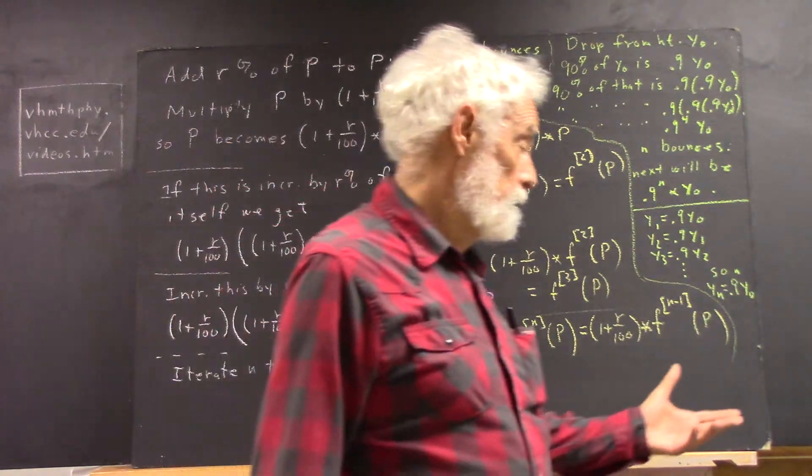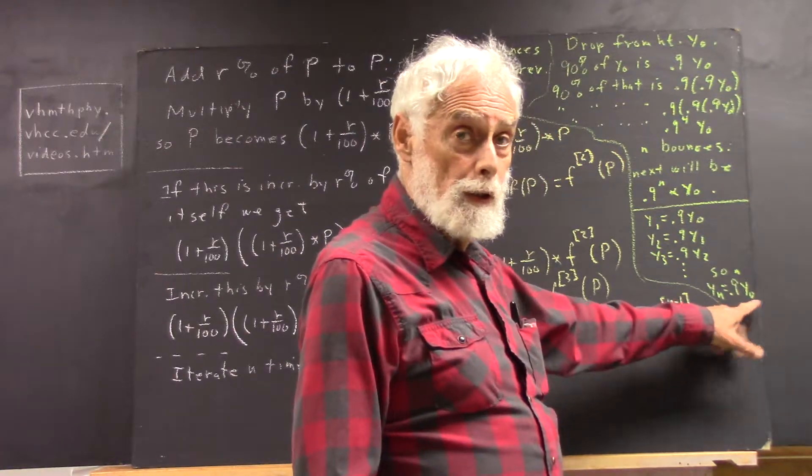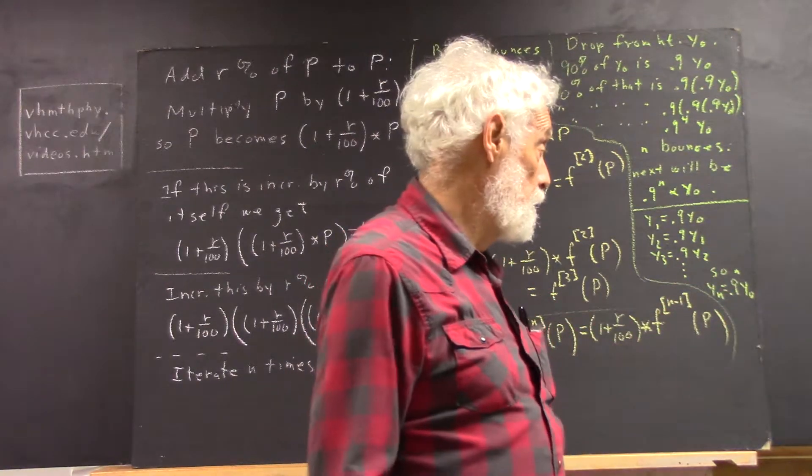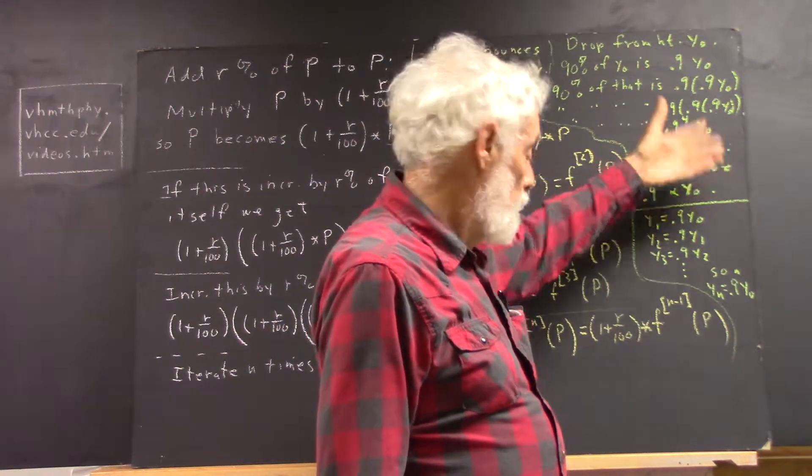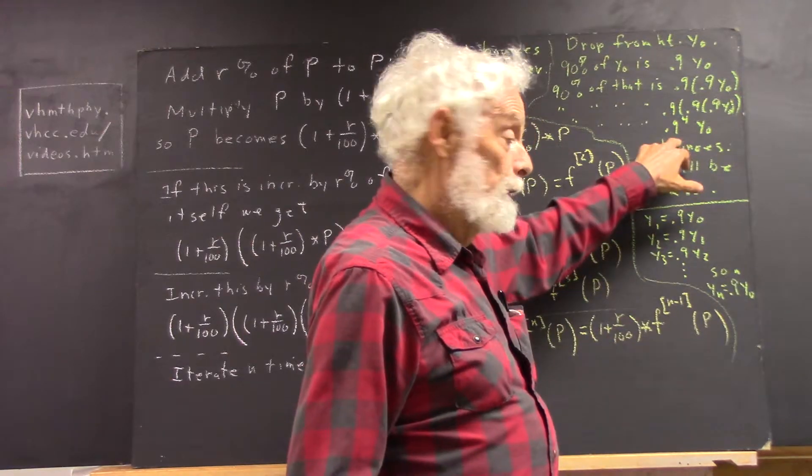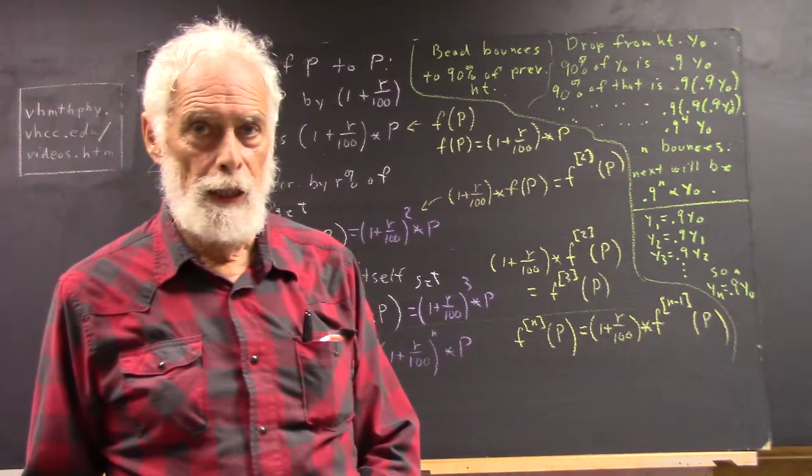Now, in the problem in your packet, you were given the y0. I think it might have been a meter. You can see what it was. And I think it was 0.9, but you might have had another question that had something besides 0.9. You should be able to figure out how to adapt that.